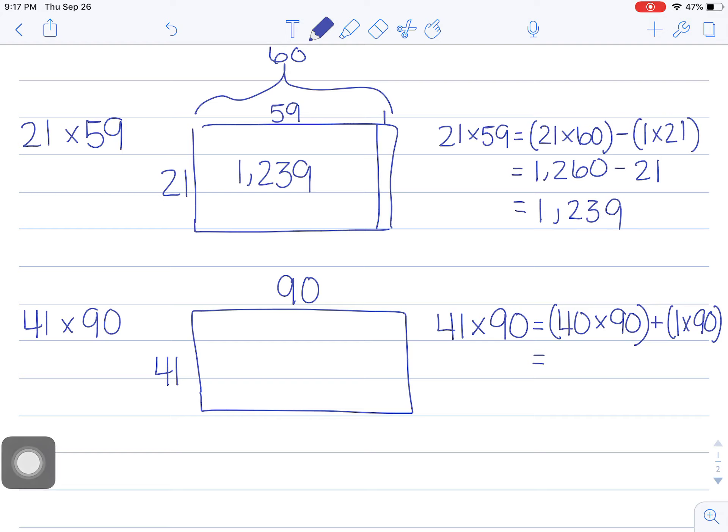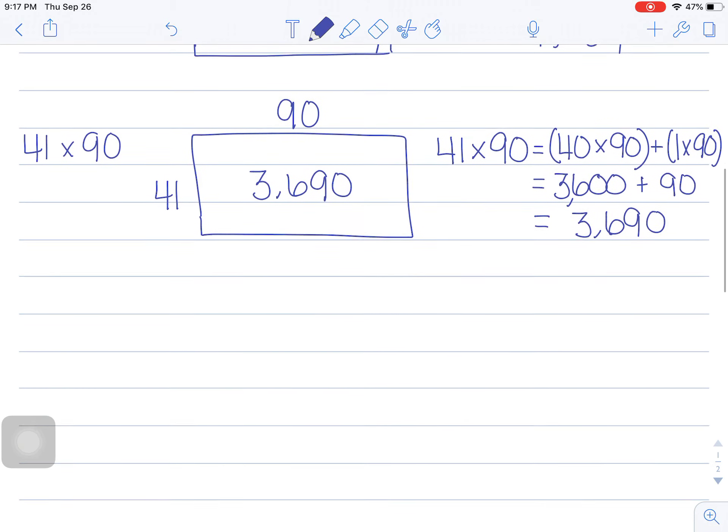I already know that 40 times 90—if I look at these two, I know that my basic facts here are 9 times 4. 40 times 90 should be 3600, plus 90 equals 3690. I'm going to go ahead and write that in here. All right, so far so good.